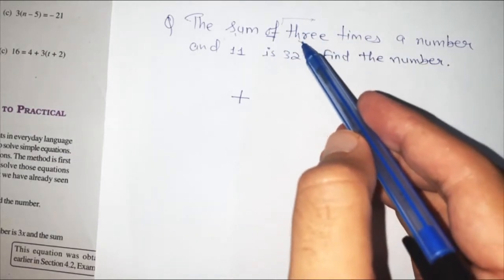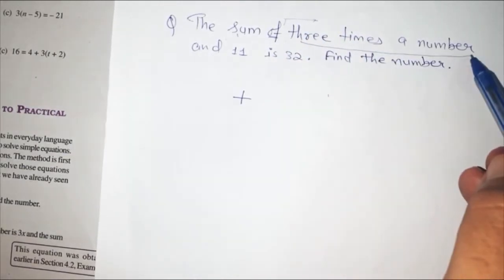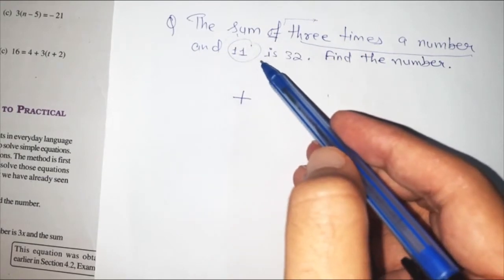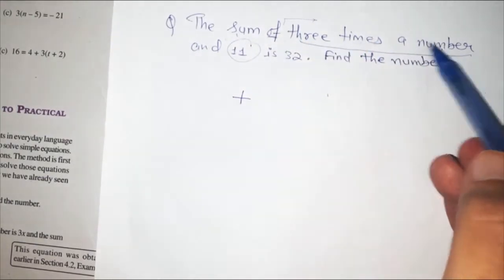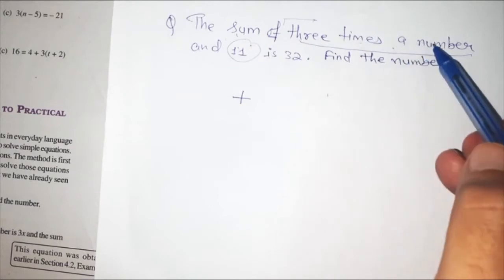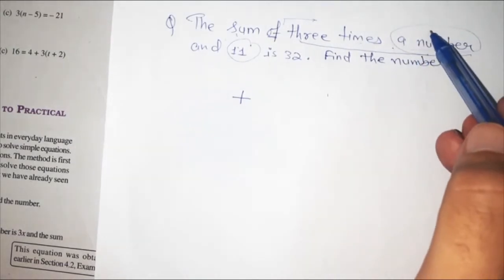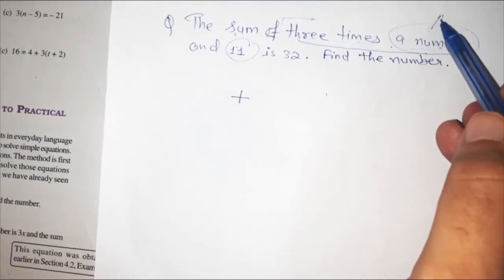Sum of 3 times a number and 11. So we are adding 3 times a number and 11. And a number we don't know the number.